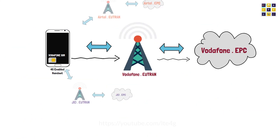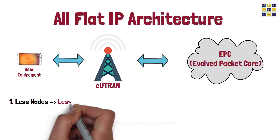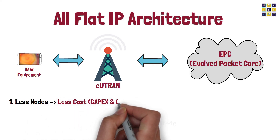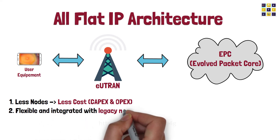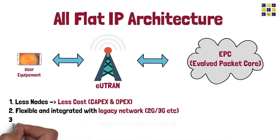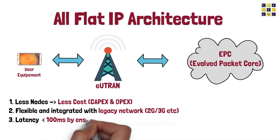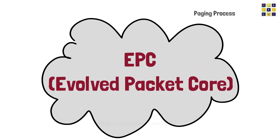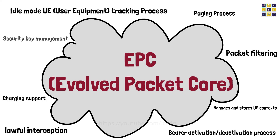An all-flat IP core network helped in reduction in the number of network elements, which greatly reduces the investment capital and operational cost, a better flexible core network that can be well integrated with the legacy network, and a lower latency of less than 100 milliseconds by ensuring quality of services on each node of the data plane. Now, this was just a simplified analogy. There are various other functionalities that the nodes of the EPC take care of, which are not covered in this video.